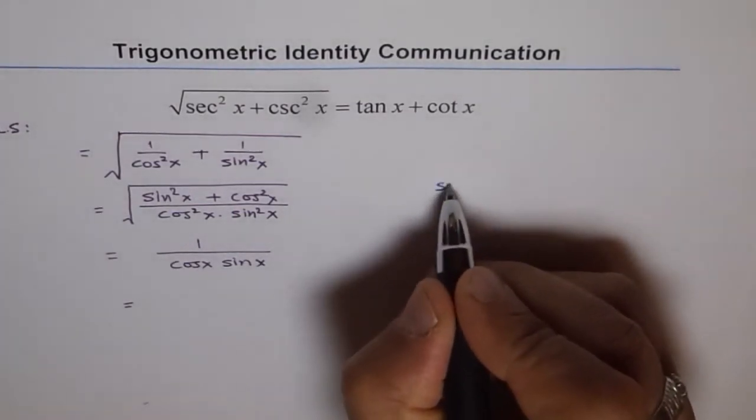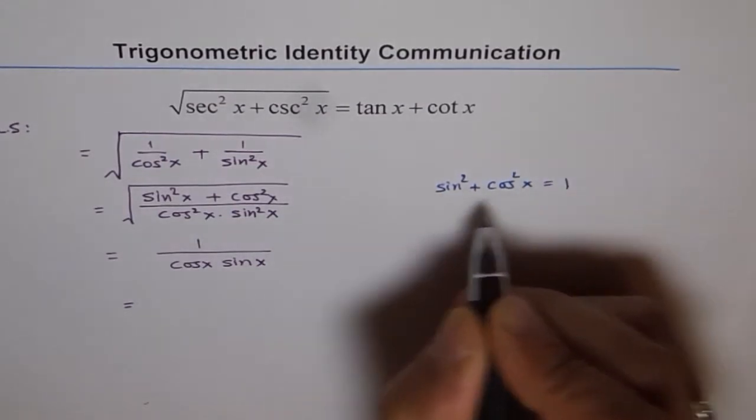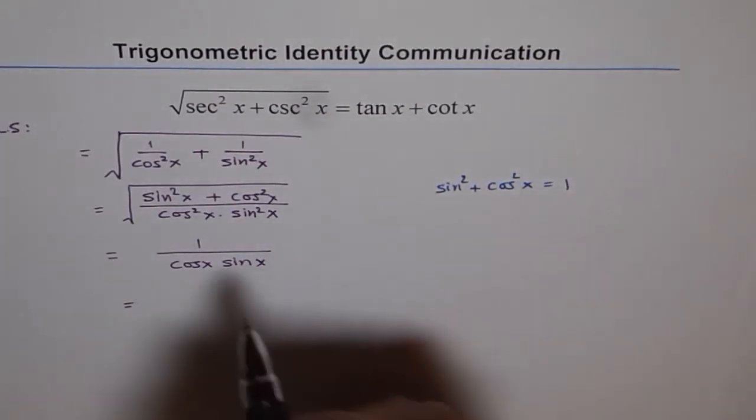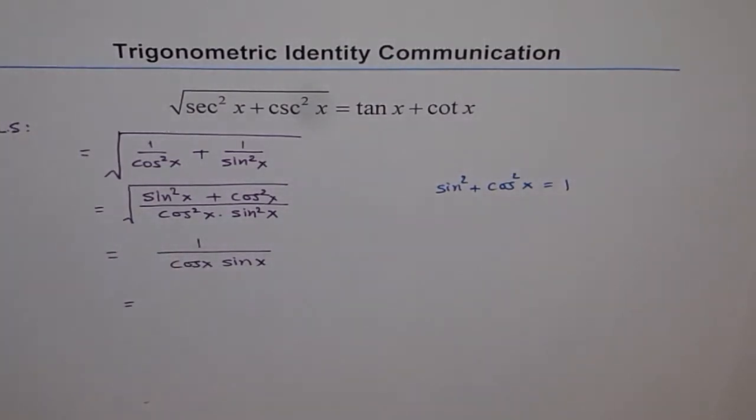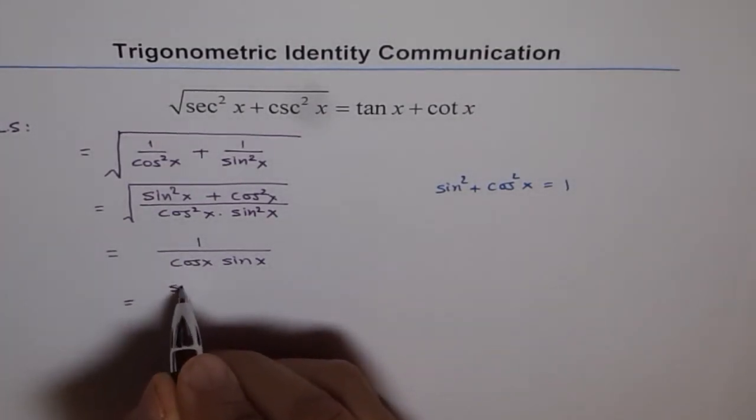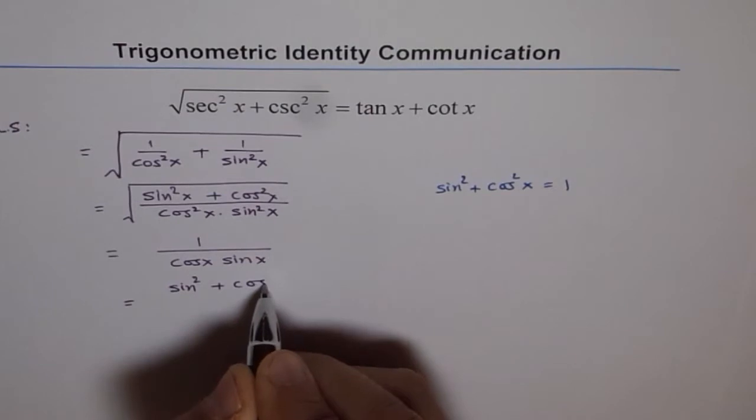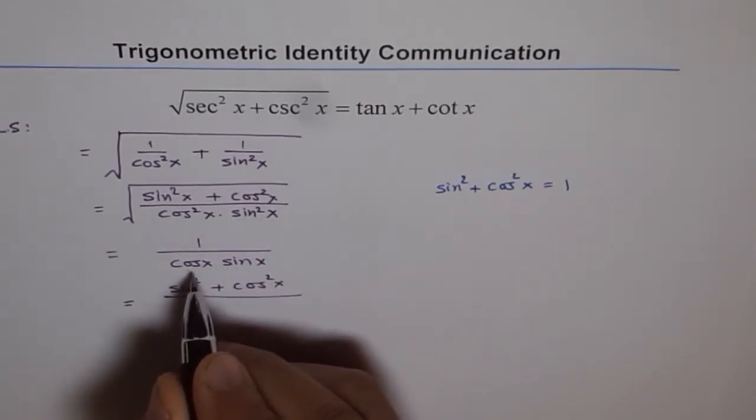We know sine square x plus cos square x equals 1. That's the Pythagorean identity. And we got 1. So now what we will do? We will revert back from 1 to sine square x and cos square x. So I will write 1 as sine square x plus cos square x divided by cos x sine x.